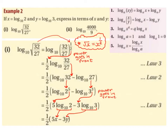We were told in the question that x equals log base 10 of 2 and y equals log base 10 of 3. So we rewrite 32 and 27 as a base of either 2 or 3: 32 can be rewritten as 2 to the power of 5, and 27 can be rewritten as 3 to the power of 3. We bring down the half and get a half times (log base 10 of 2⁵ minus log base 10 of 3³).